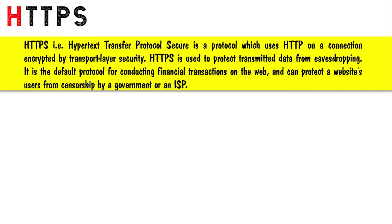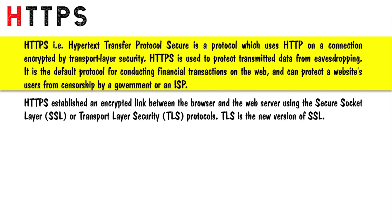HTTPS, that is hypertext transfer protocol secure, is a protocol which uses HTTP on a connection encrypted by transport layer security. HTTPS is used to protect transmitted data from eavesdropping. It is the default protocol for conducting financial transactions on the web and can protect a website's users from censorship by government or an ISP. HTTPS establishes an encrypted link between the browser and the web server using SSL or TLS protocols.